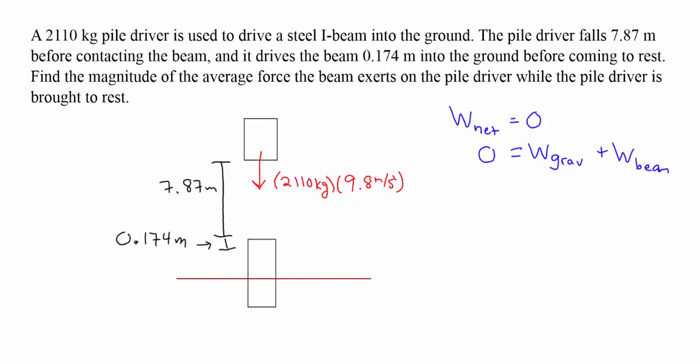The force of gravity is the mass, 2,110 kilograms, times 9.8 meters per second squared, which is 20,678 Newtons.